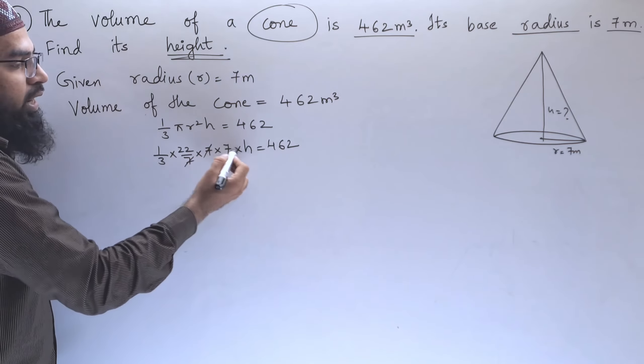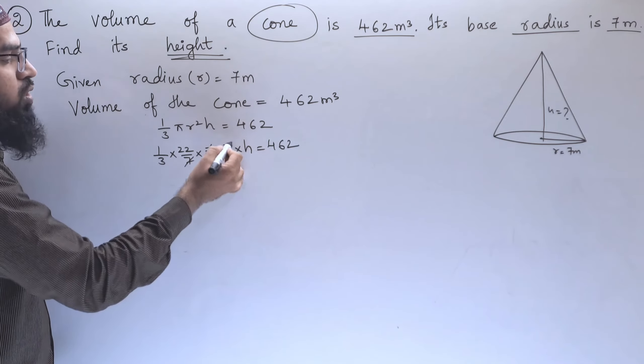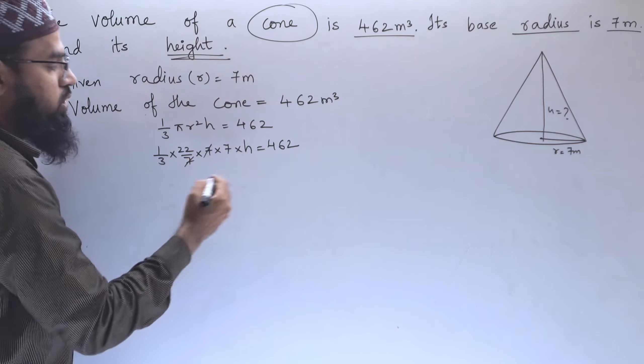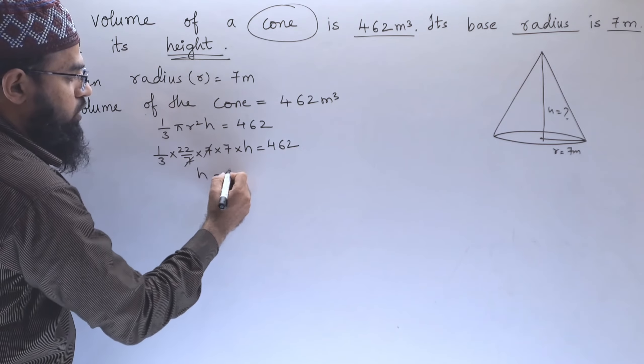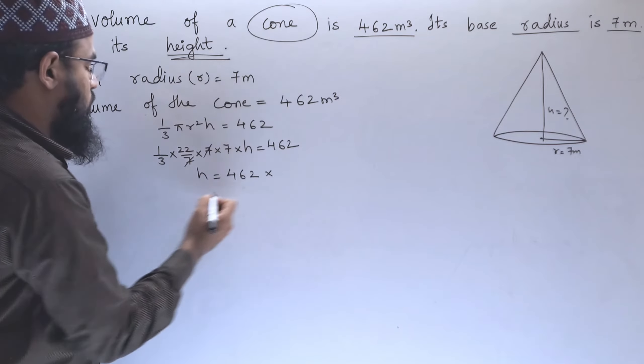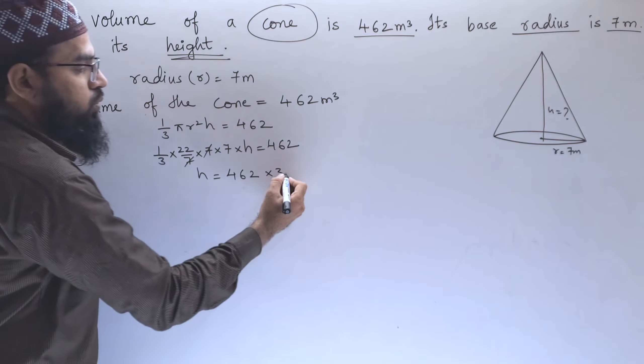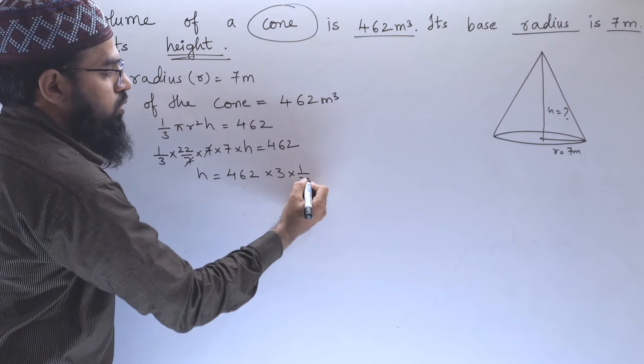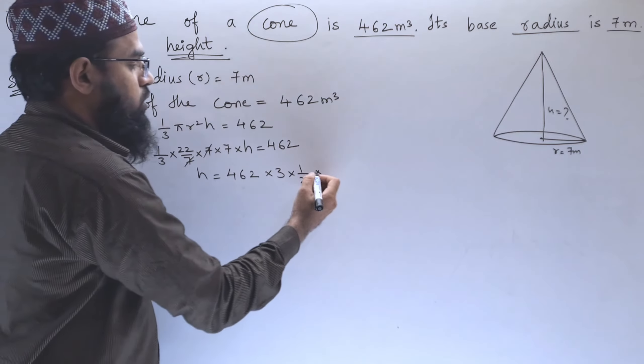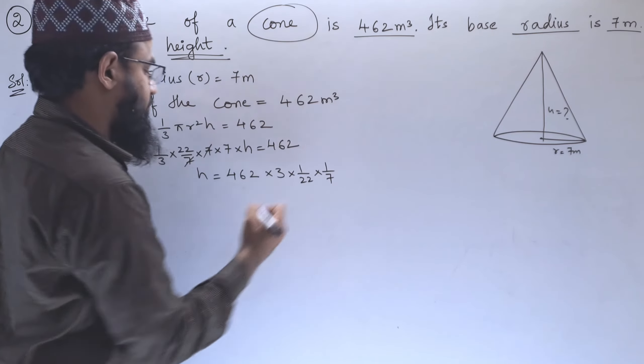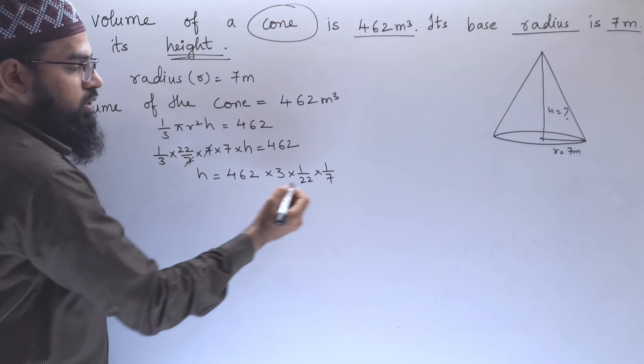7. Except h, we send all the numbers to that side, so we get h equals 462 into... this 1 by 3 becomes 3, and 22 goes into the denominator, 7 also goes into the denominator. Now we can cancel this